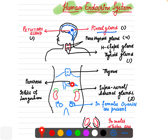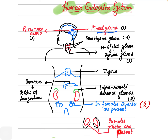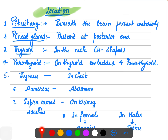Then there is the pancreas — a leaf-like structure containing the islets of Langerhans. Next are the kidneys, and on top of each kidney is the suprarenal, also called the adrenal gland — two in number. In females there are two ovaries; in males the testes are present. This covers the location of all the major endocrine glands.